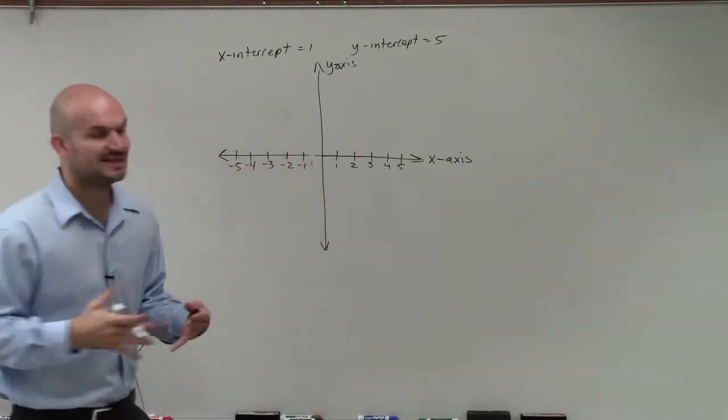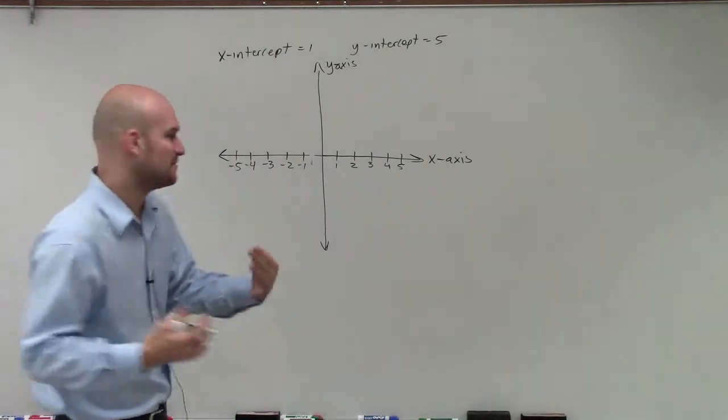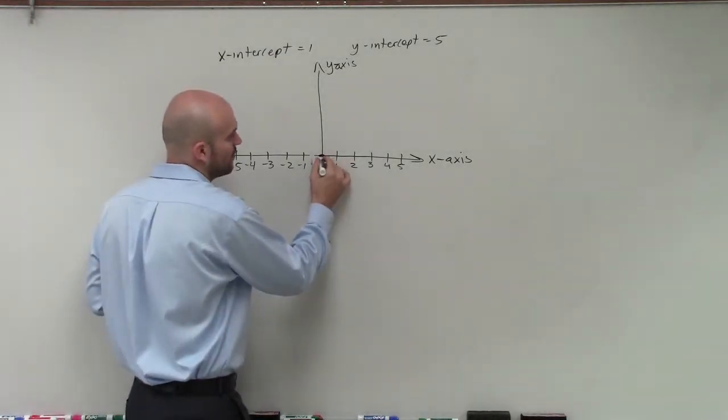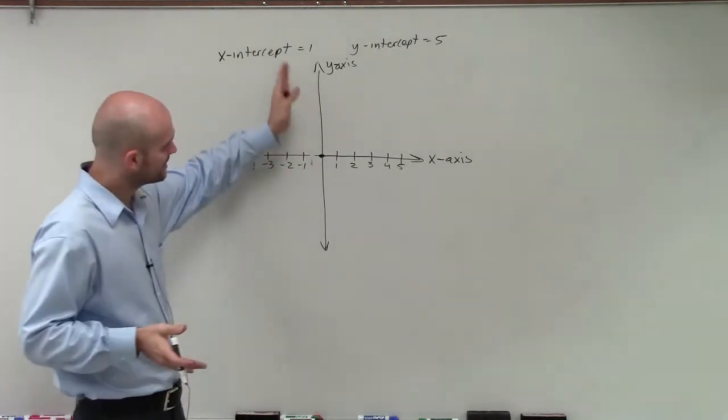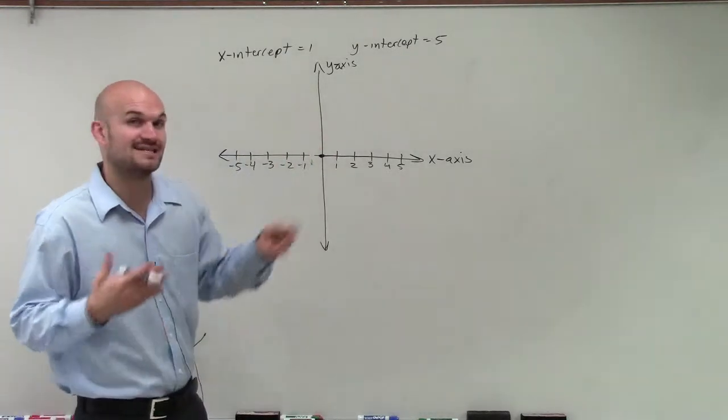Now, what these values, negative and positive, they're pretty much meaning is a distance from what we call this point, which we call the origin. And we call it the origin because that's also where the x and the y-axis intersect.